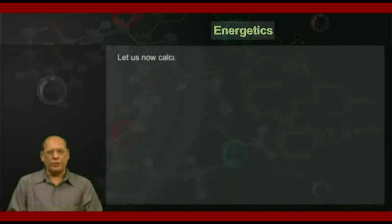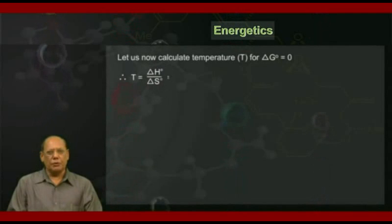Let us now calculate the temperature T for which ΔG° would be equal to zero. It can be done by the formula T = ΔH°/ΔS°, which equals 491.18/0.198 = 2483.8 K.